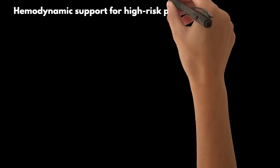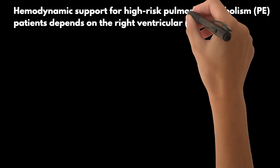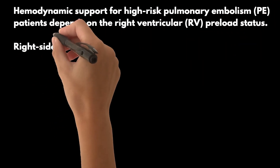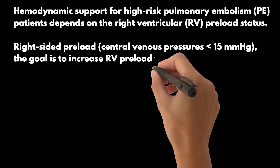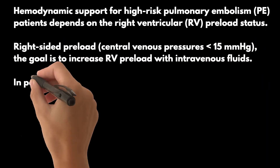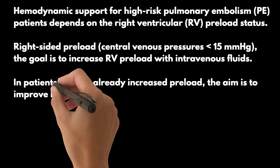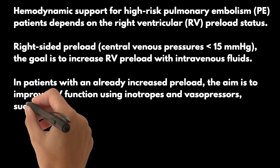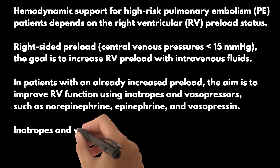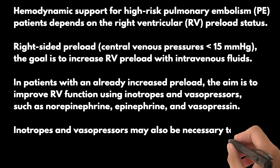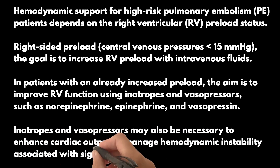Hemodynamic support for high-risk PE patients depends on the RV preload status. For patients without signs of increased right-sided preload, the goal is to increase RV preload with intravenous fluids. In patients with an already increased preload, the aim is to improve RV function using inotropes and vasopressors, such as norepinephrine, epinephrine, and vasopressin. Inotropes and vasopressors may also be necessary to enhance cardiac output or manage hemodynamic instability associated with significant tachycardia.